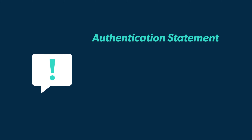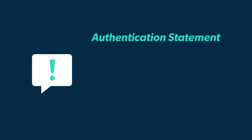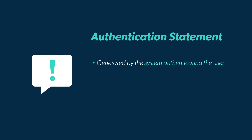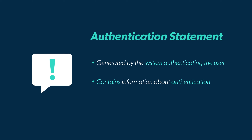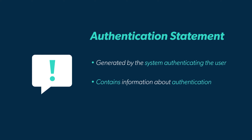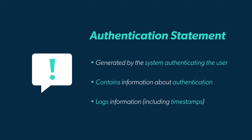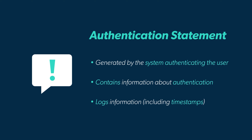The first is the Authentication Statement. These assertions are generated by the system that authenticates a user. They contain information about how the authentication decision occurred, and they log information including timestamps.